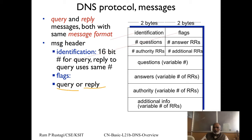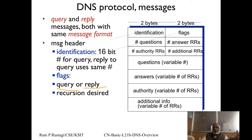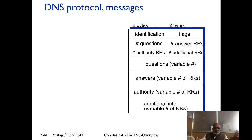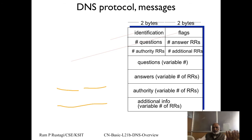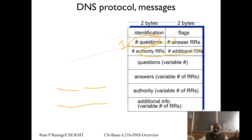The flags field indicates whether it is a DNS query or reply, and whether recursion is desired. The server can also indicate whether recursion is available, and whether the reply is authoritative or non-authoritative. In a DNS request, number-of-questions is typically 1 and there are no answer records. In a response, the number of answer records corresponds to the number of IP addresses returned; similarly, authority record count and additional record count vary accordingly.